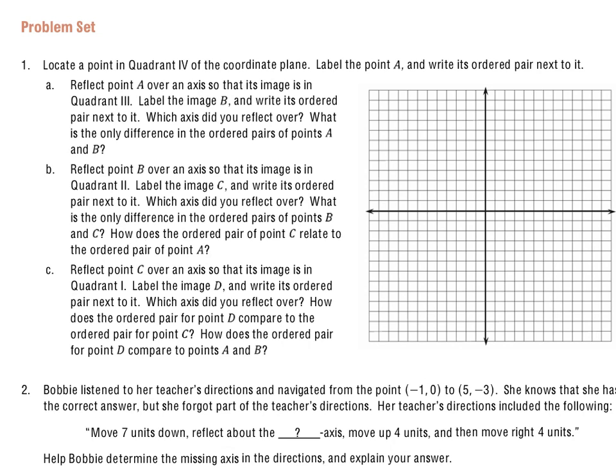Start reading with number 1, and it says, locate a point in quadrant 4 of the coordinate plane. Label the point A, and write its ordered pair next to it.